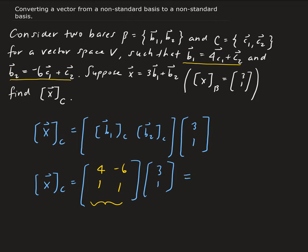So now, all we have to do is multiply this out. So this is going to be, we have 4 times 3, plus negative 6 times 1, for the first entry, and for the second entry of 1 times 3, plus 1 times 1.